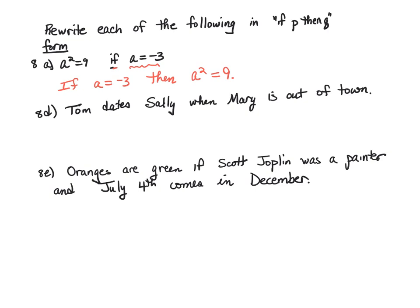Try 8d and 8e by yourselves. In 8d — 'Tom dates Sally when Mary is out of town' — there's no 'if' and no 'then' at all. We could rewrite this as: when does Tom date Sally? When Mary is out of town. So: if Mary is out of town, then Tom dates Sally. The antecedent is 'Mary is out of town' and the consequent is 'Tom dates Sally.'